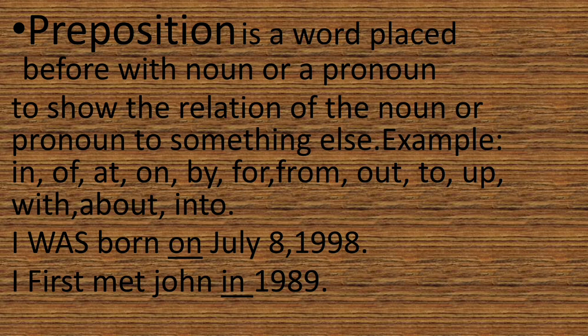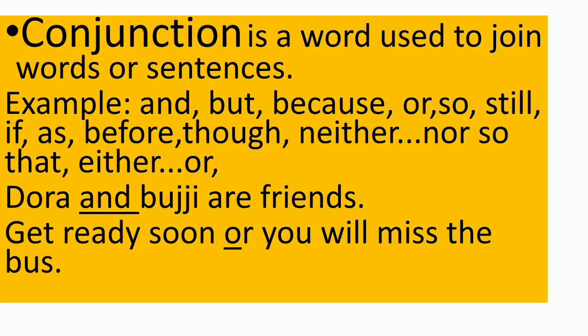For example: 'A cat is on the table' — the preposition is 'on,' showing the cat is on top of the table. And the next one is conjunctions. A conjunction is a word used to join words or sentences. Examples: and, but, because, or, so, still, if, as, before, neither, nor.